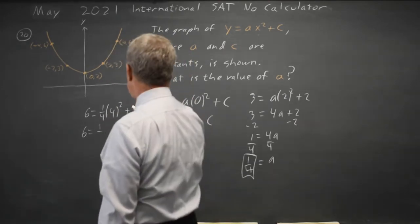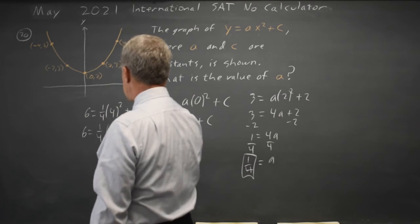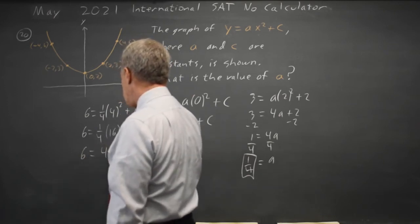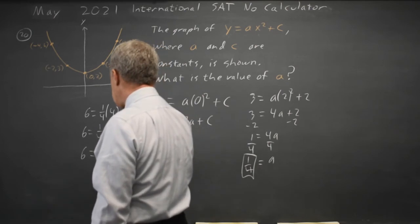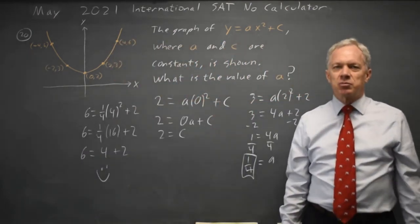I should have written a 2. c equals 1 fourth of 16 plus 2, 1 fourth of 16 is 4, plus 2 equals 6. So yes, that does work, a is 1 fourth or 0.25.